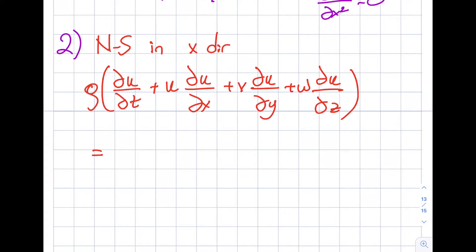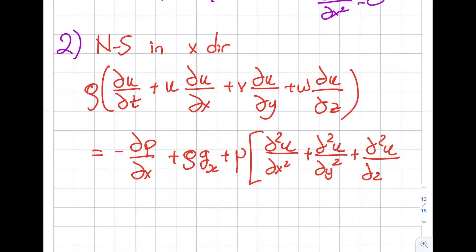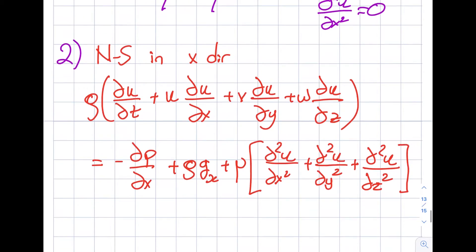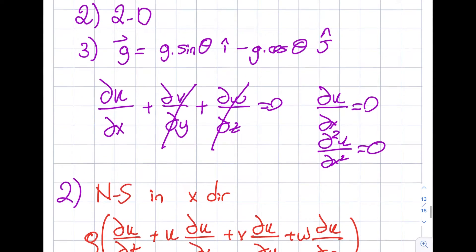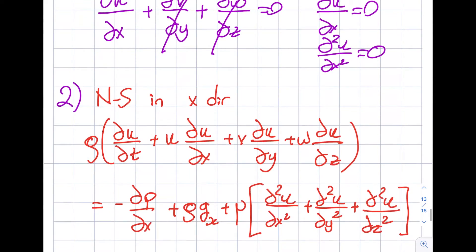will be equal to minus del p del x plus rho g_x plus viscosity times del square u del x square plus del square u del y square plus del square u del z square. And then I will look at my special cases and see what will happen over here.